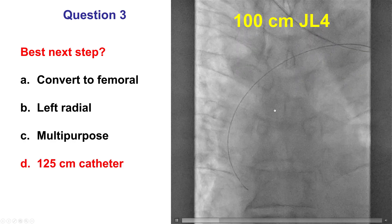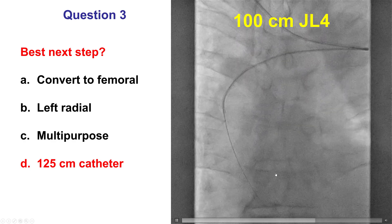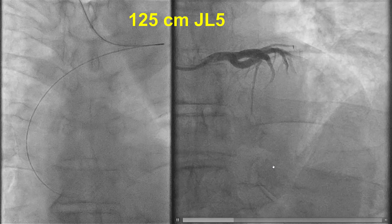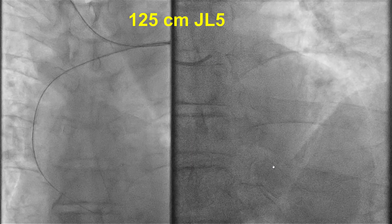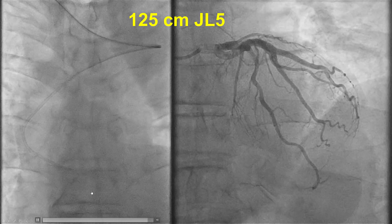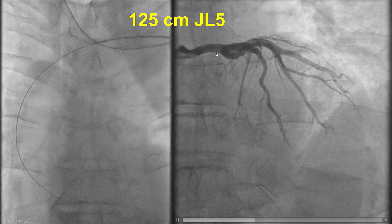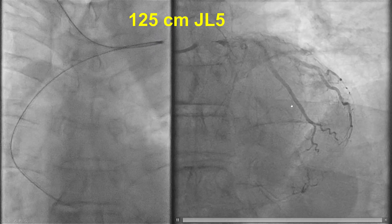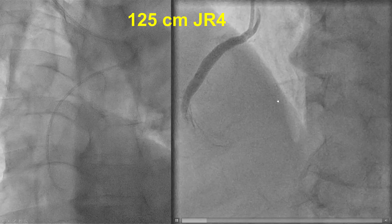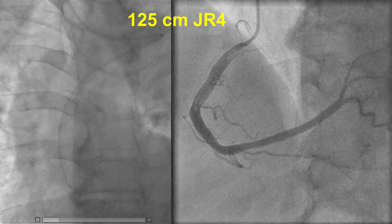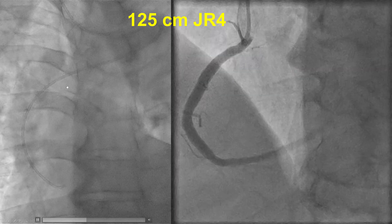In this particular case, the issue was the catheter length — the catheter was simply not long enough to reach all the way to the coronary ostium. That is why we used a 125 cm GL5 catheter, which was long enough to successfully deliver all the way to the coronary cusps and into the left main, and angiography was successfully performed. Using a 125 cm GR4 catheter was then used for engaging the right coronary artery.